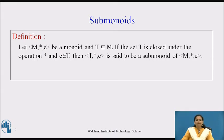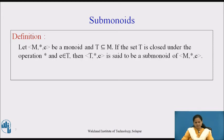The definition once again requires that T is closed under the operation *, just as with the sub-semi-group. Additionally, there is the condition that the identity element e must also be present in the set T. That is how the definition of a sub-monoid differs from that of a sub-semi-group.